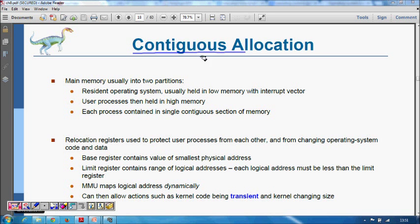In this lecture we will learn about the contiguous allocation of processes in main memory and how it works for multiprogramming. Your main memory is where all the processes have their code to be executed, so it has two partitions.